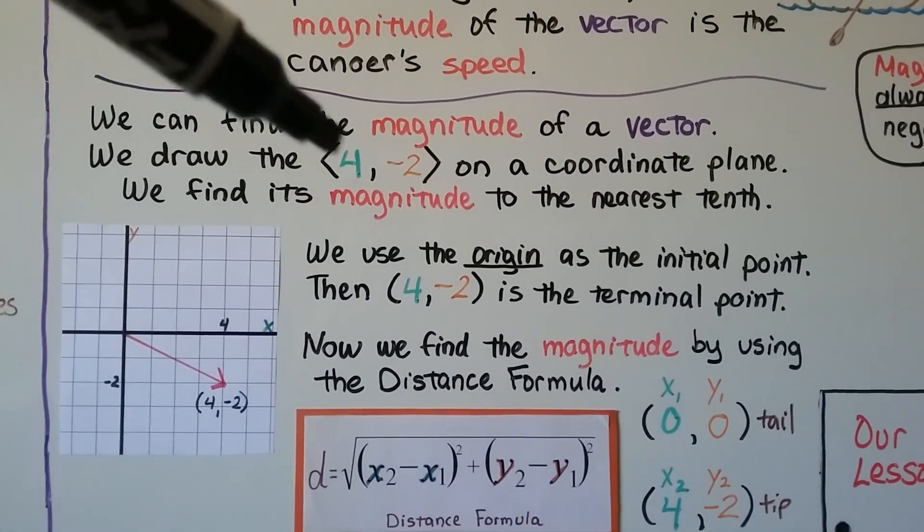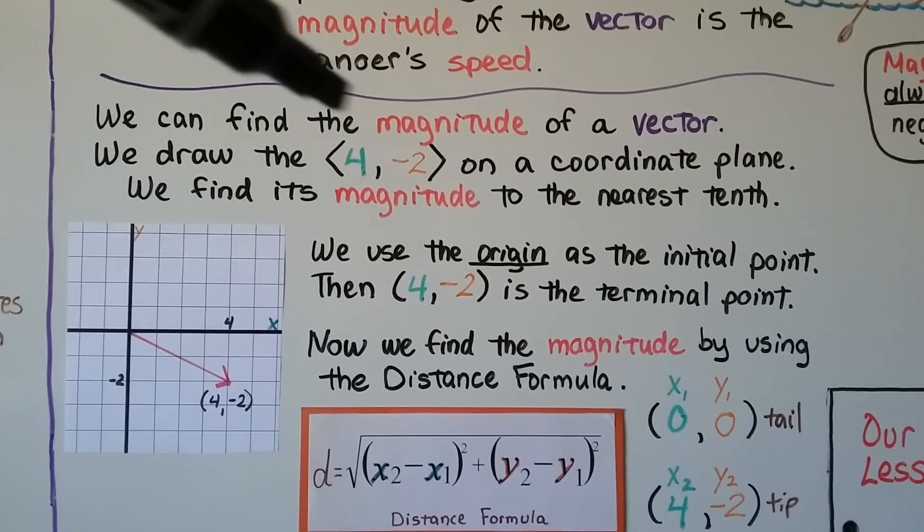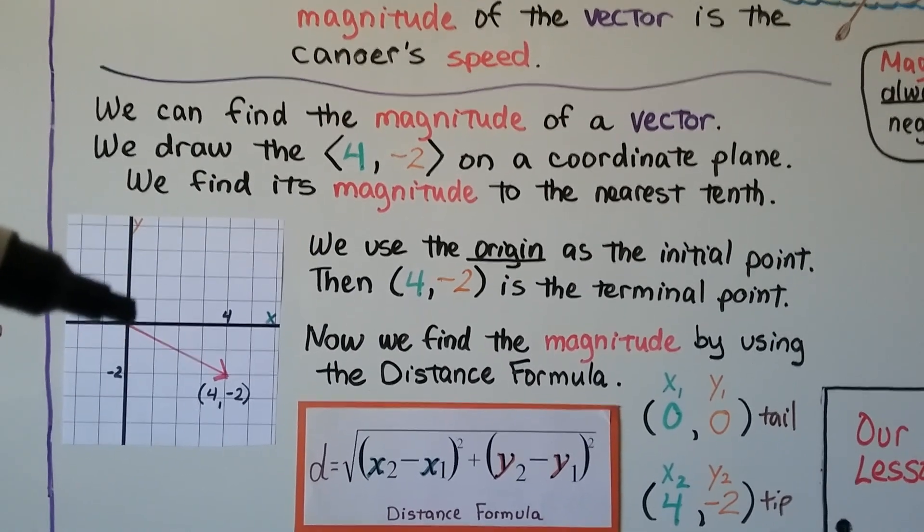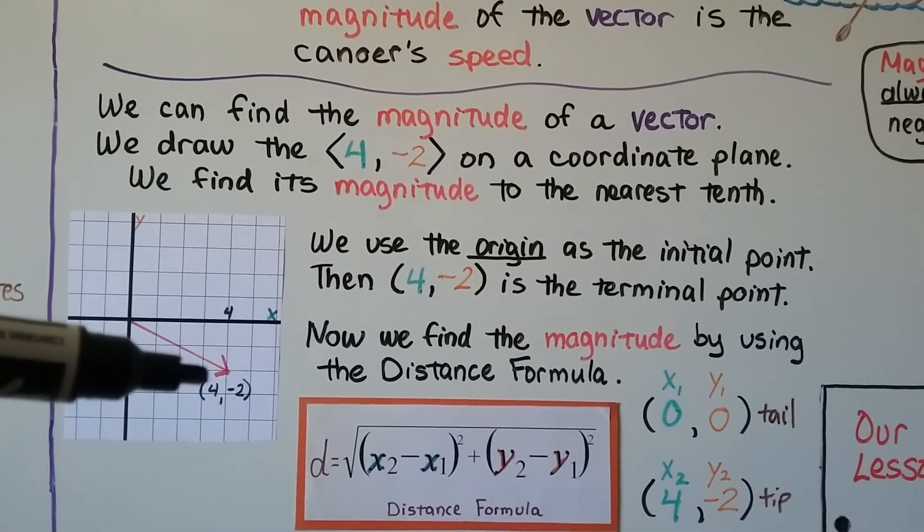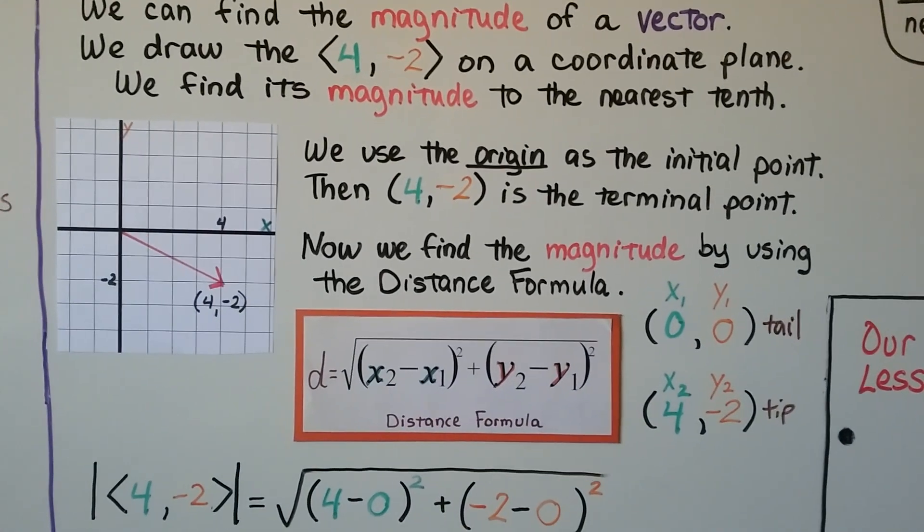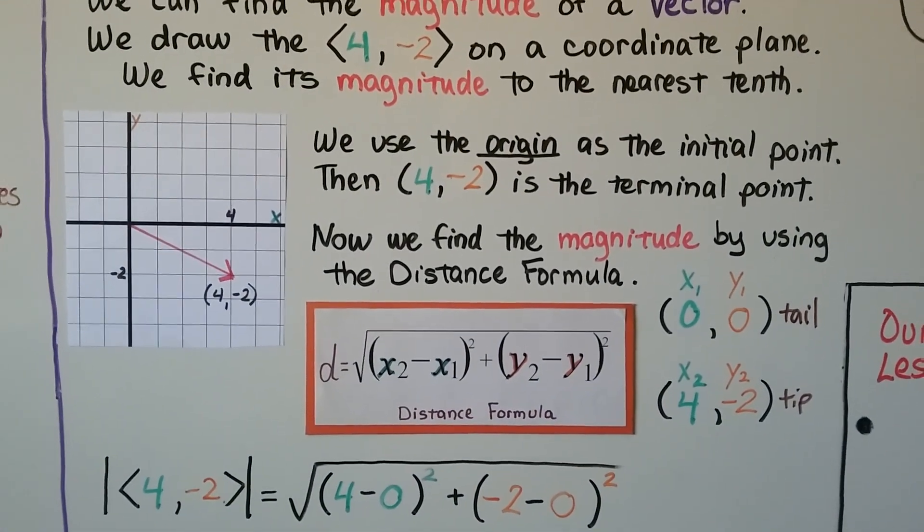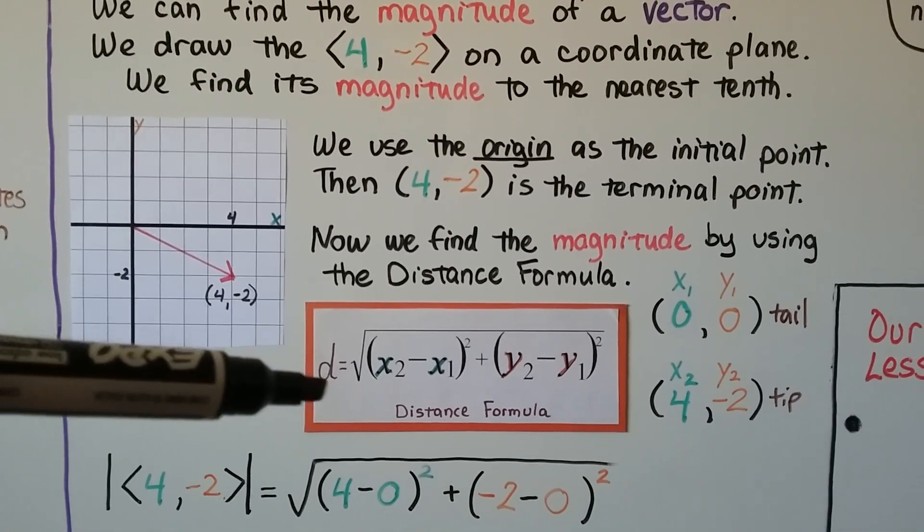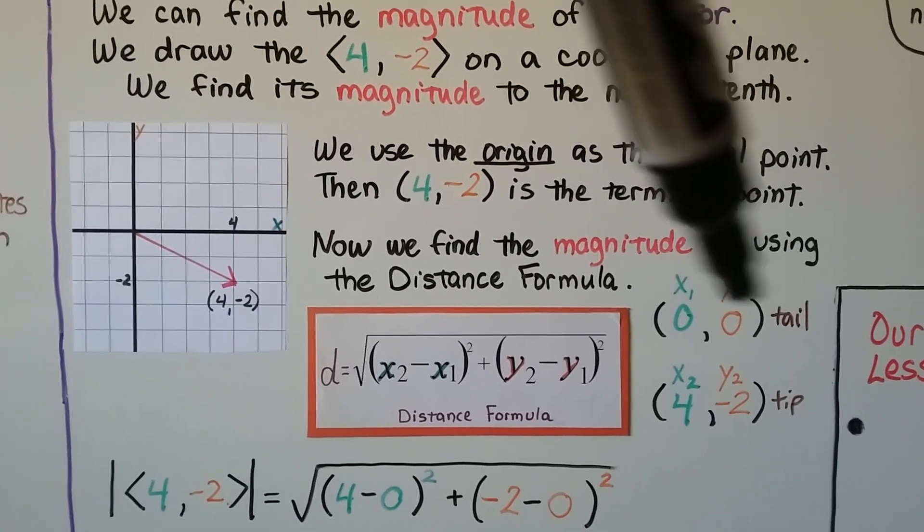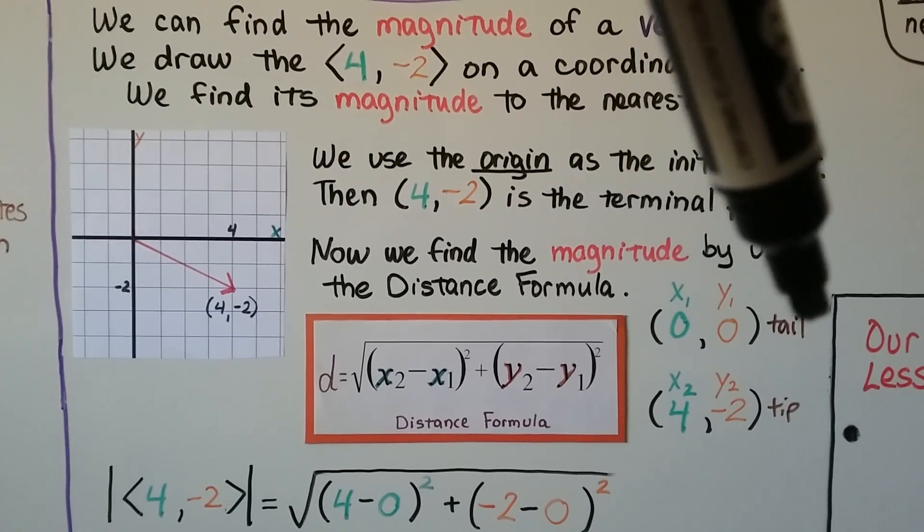We can find the magnitude of a vector. We draw the 4 negative 2 on a coordinate plane. So we know it starts at the origin. So that's the initial point. Then 4 negative 2 is the terminal point. Now we find the magnitude by using the distance formula. Actually, it's a variation of the distance formula because we'd have the vector here. So for our x sub 1, y sub 1, it's at the origin. So we've got 0, 0 as our tail.